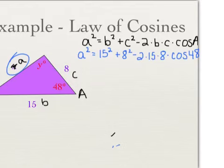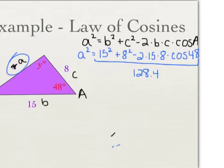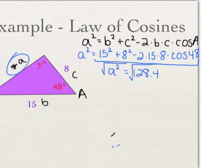15² + 8² − 2 × 15 × 8 × cosine(48) gives about 128.4. That's equal to A squared. Am I done? No — I need to take the square root because I'm looking for A, not A squared. Taking the square root gives about 11.3. Does that number make sense? If the triangle has sides 15 and 8, then 11.3 is reasonable. Law of cosines when finding a side length is not so bad.